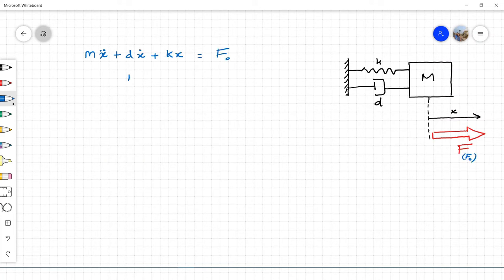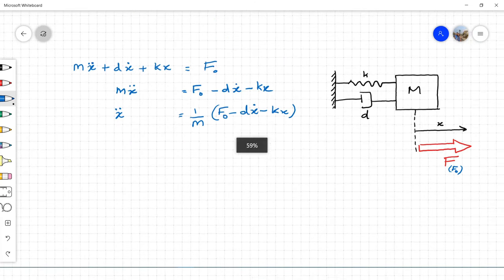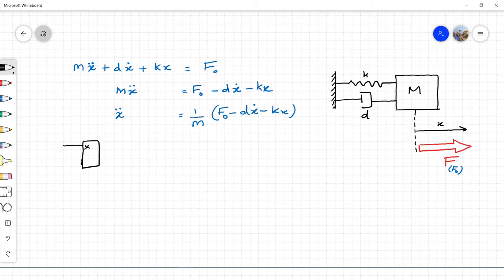Now let's rewrite the equations of motion: m·ẍ = Fin - d·ẋ - k·x. So ẍ = (1/m)·(Fin - d·ẋ - k·x). This equation is sufficient to model the system in any programming software.